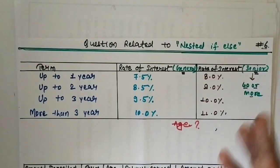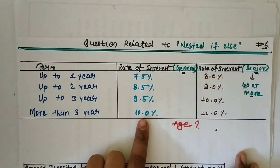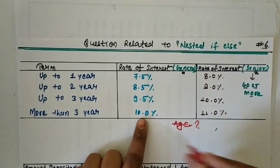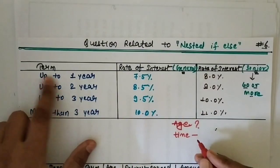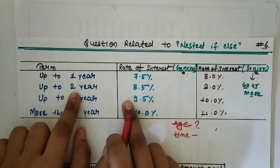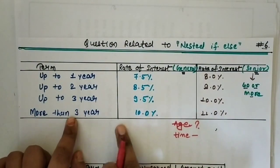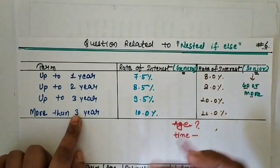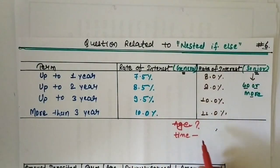When you know the age, then you have to calculate the rate of interest — whether this rate will be applied or that rate. Suppose your age is 25, then you know which rate applies. After that, the next thing is time — how many years do you want to fix the deposit? If it is one year you get 7.5, two years you get 8.5, three years you get 9.5, and more than three years you get 10 percent. So the first thing is age and the second thing is time.